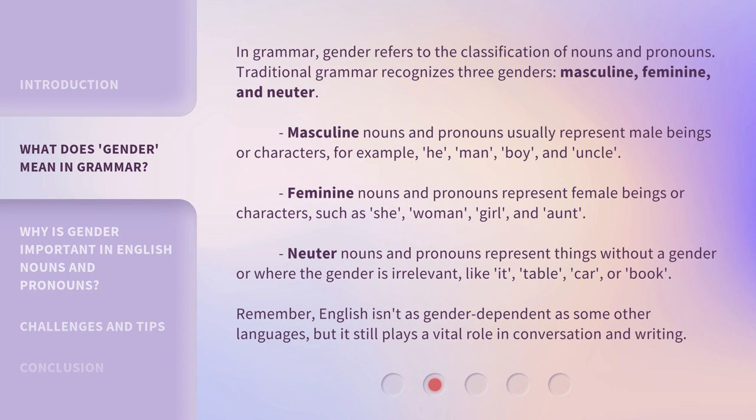Feminine nouns and pronouns represent female beings or characters, such as she, woman, girl, and aunt. Neuter nouns and pronouns represent things without a gender or where the gender is irrelevant, like it, table, car, or book. Remember, English isn't as gender-dependent as some other languages, but it still plays a vital role in conversation and writing.